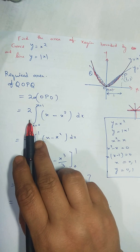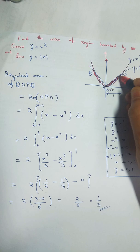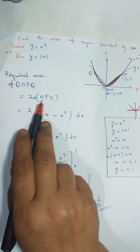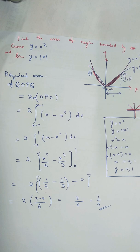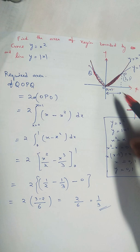So I am only finding area of this, so I have written 2 times area of OPO. What are the limits? Definitely we have to integrate with respect to x. So this is 0 and this distance should be 1.